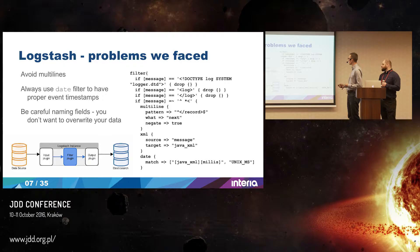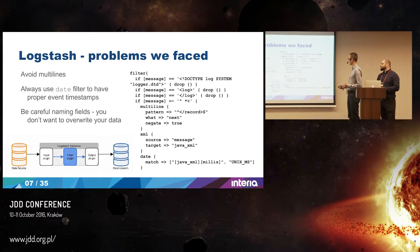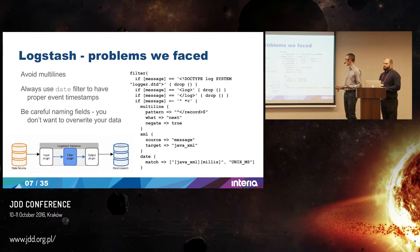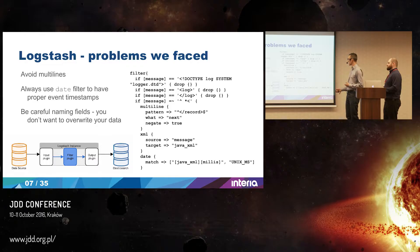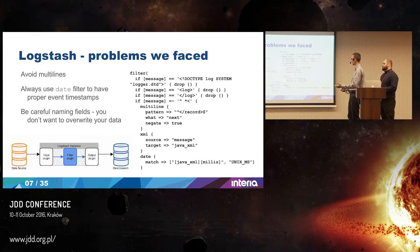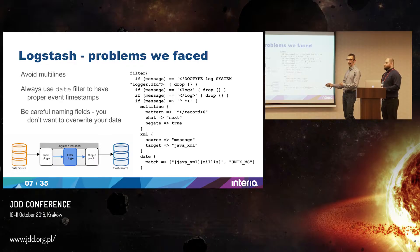Another gotcha is that if you use XML or JSON as a log format, it's quite easy to overwrite your other variables. There is a special variable in Logstash called 'message', which is where the original message from input is stored. But if you have a field called 'message' in your XML, it will replace it. This is why we use a target — we extract every variable from the XML document to our Java XML namespace, so we could have another variable 'message' separately.